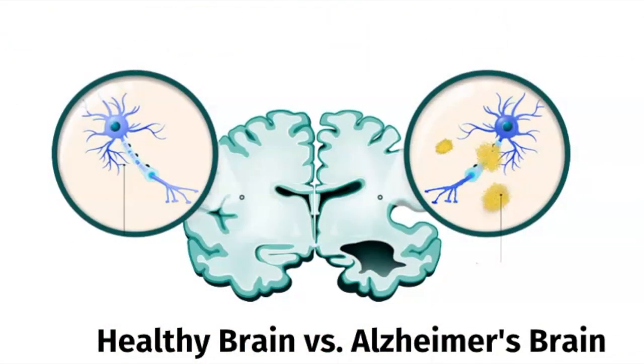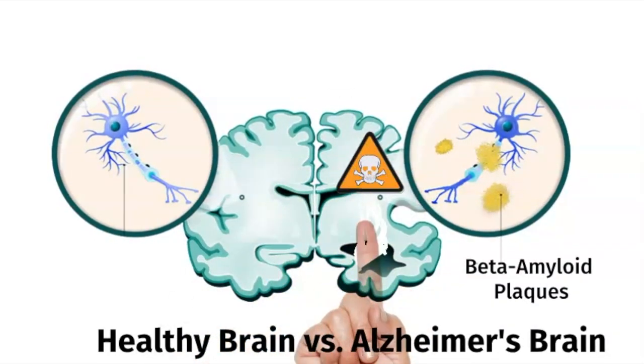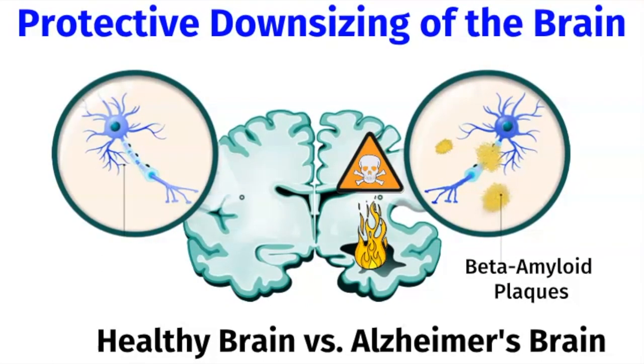It turns out that beta-amyloid plaques are actually the brain's defense mechanism against toxic and inflammatory insults. Unfortunately, this leads to a protective downsizing of the brain.